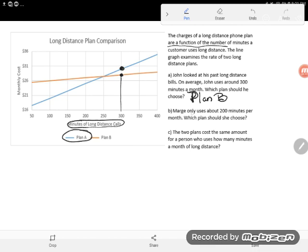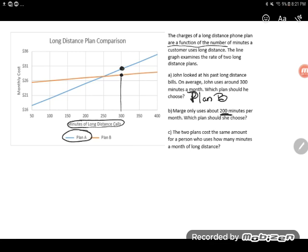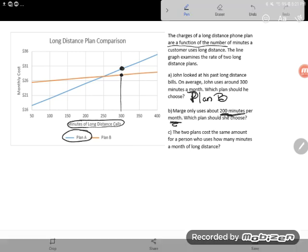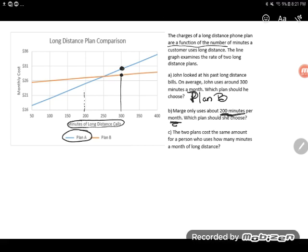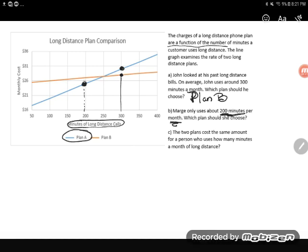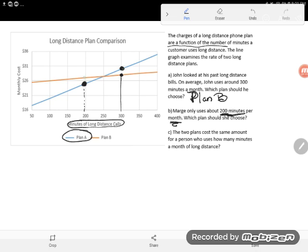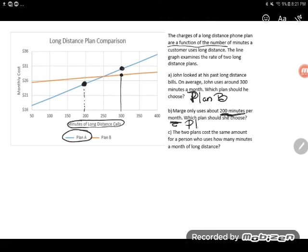Now let's take a look at Marge. Marge only uses about 200 minutes per month. She's not talking as much as John here. Which plan should she choose? Well, let's take a look. Marge here, if you come up here, which plan is cheaper when you only use 200 minutes a month? You can definitely see that the blue line, or the blue plan, Plan A, is cheaper here than Plan B. And it's got a lower cost. And so I think Marge should use Plan A.